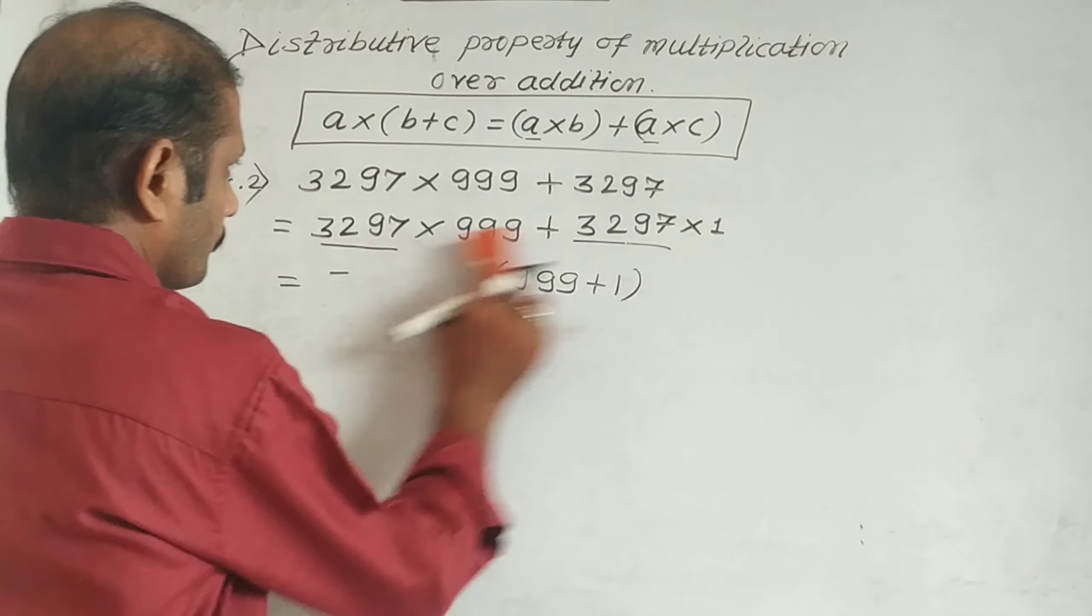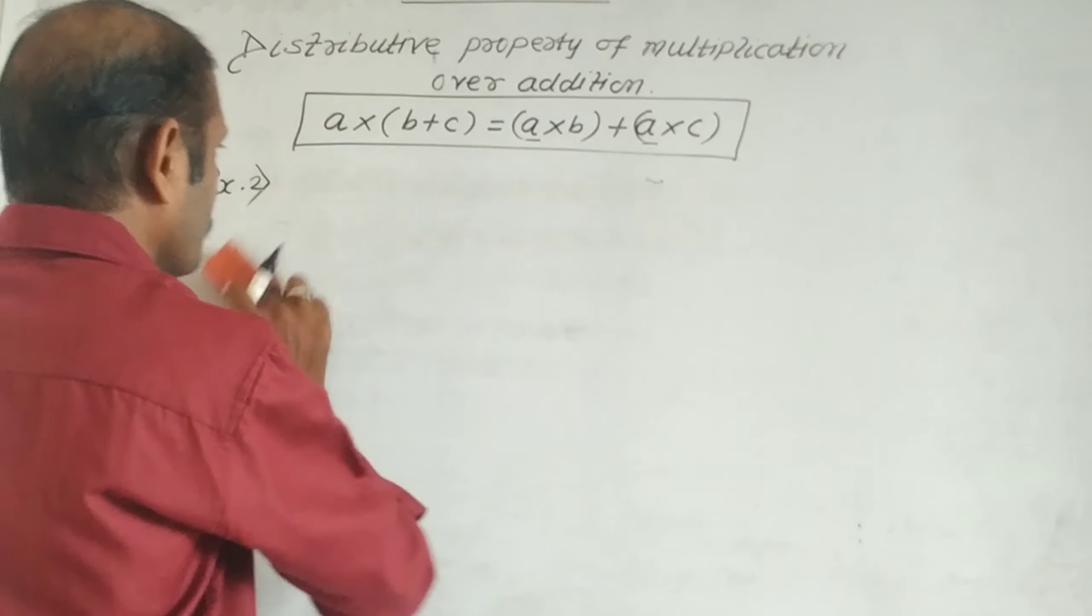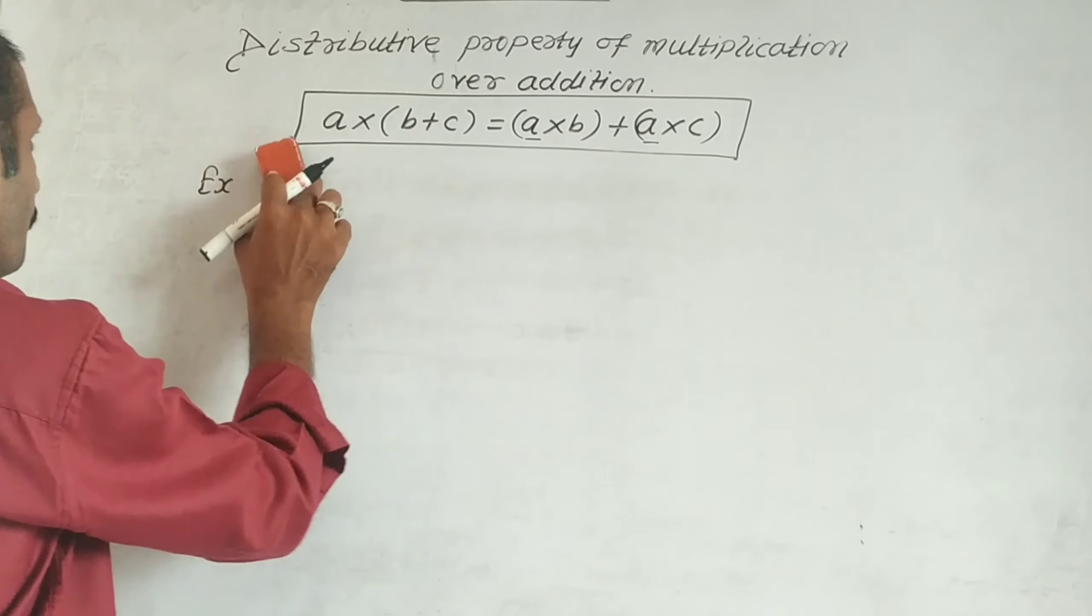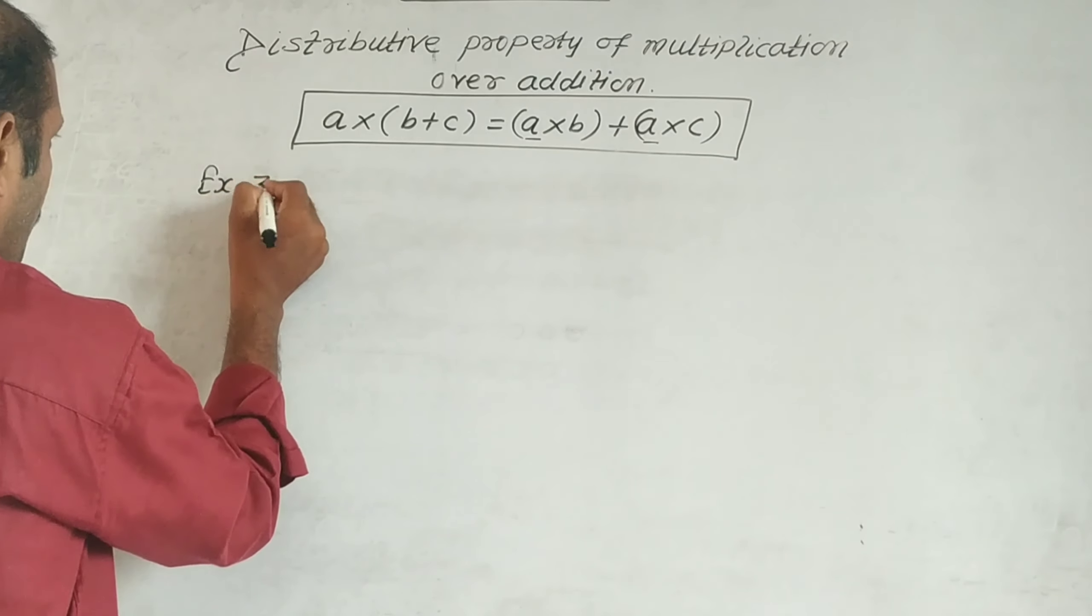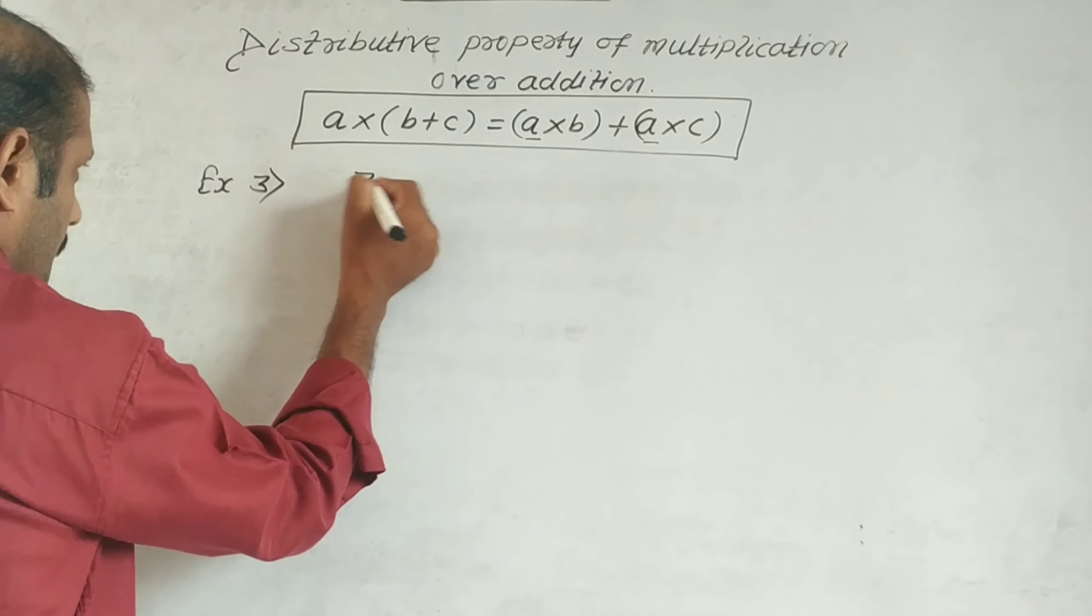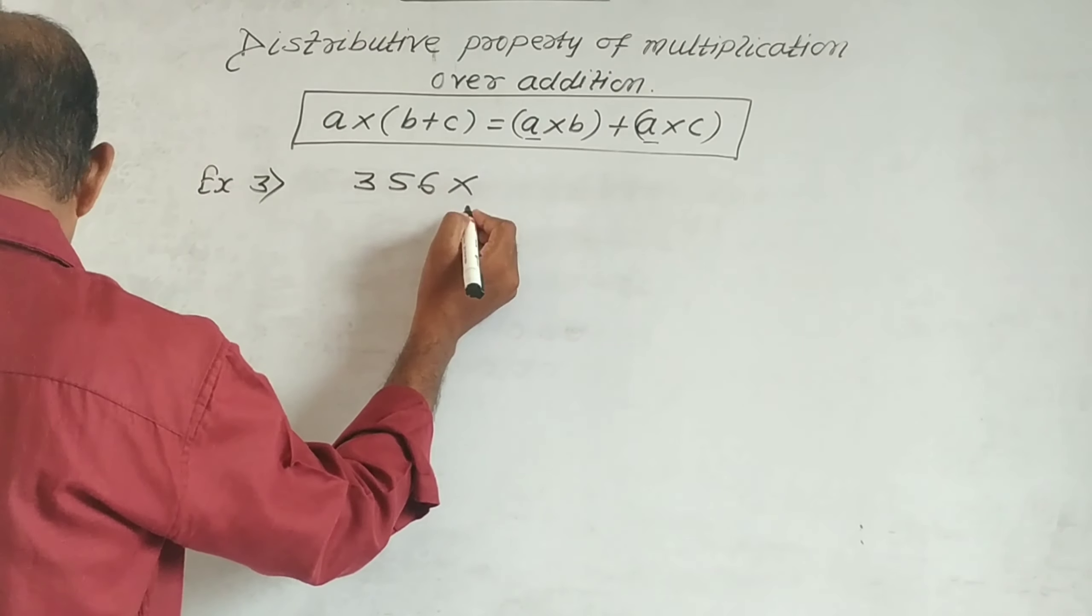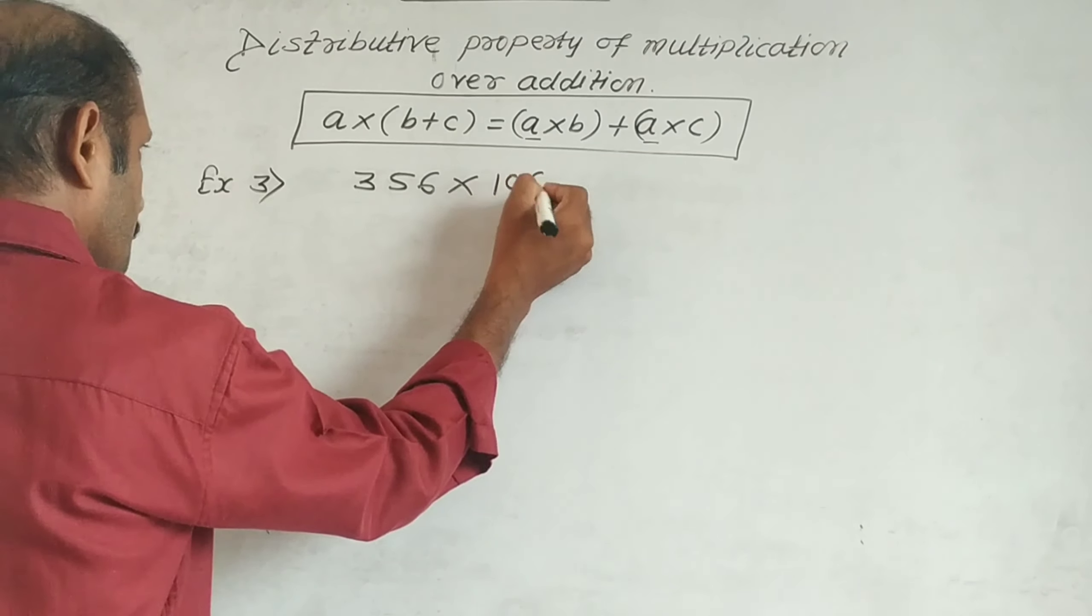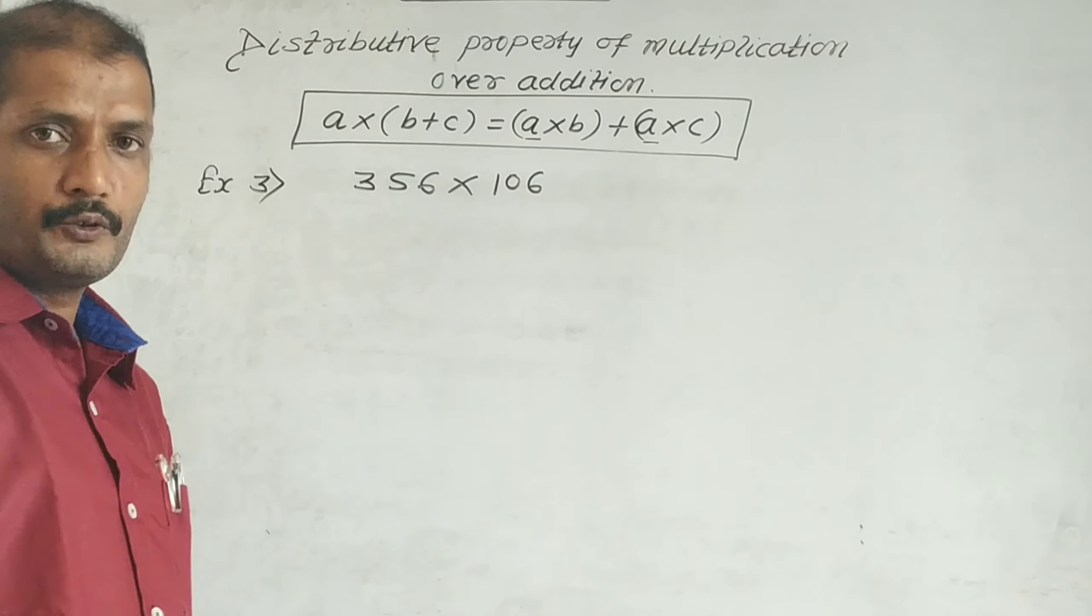Let's see one more example. This is a third type of example where we'll see how to use the distributive property of multiplication over addition.